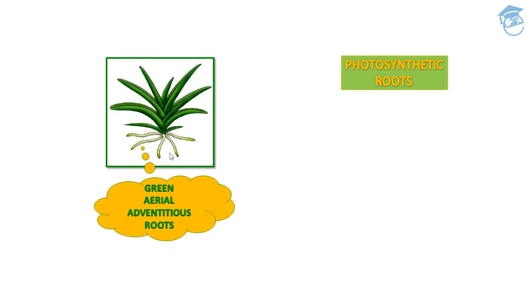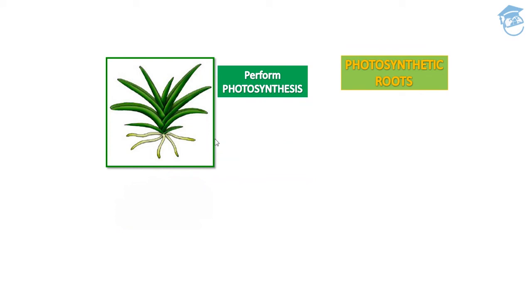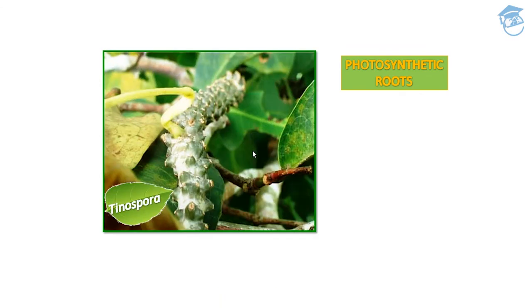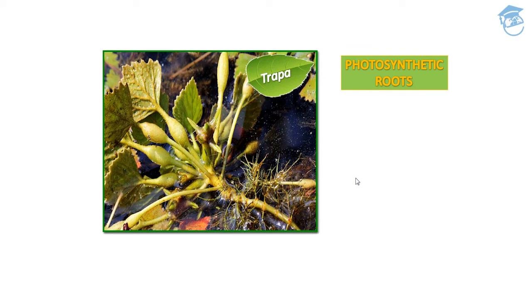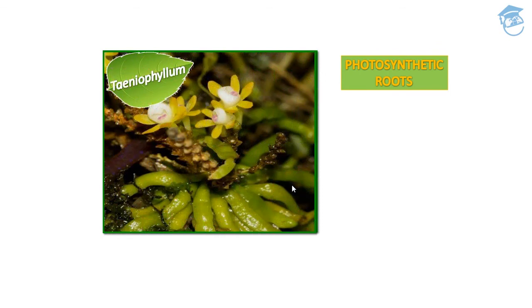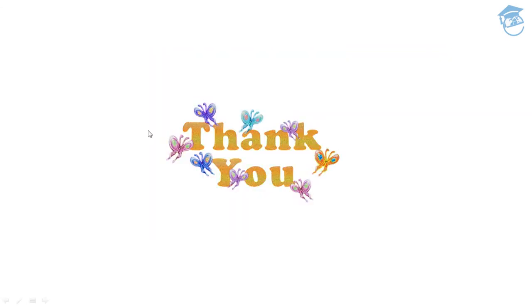Now let's talk about photosynthetic roots. They are green aerial adventitious roots that perform photosynthesis and are also called assimilatory roots. They are seen in Tinospora, Trapa, and Taeniophyllum.